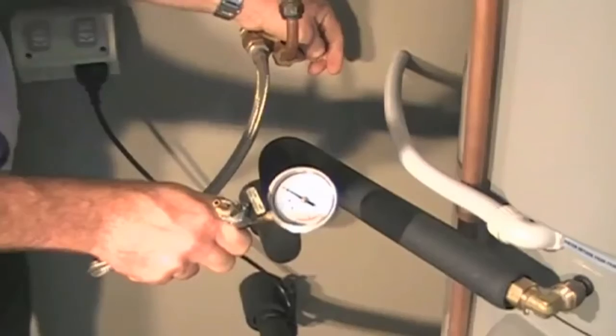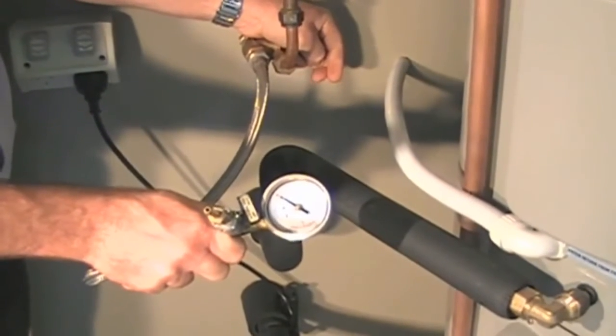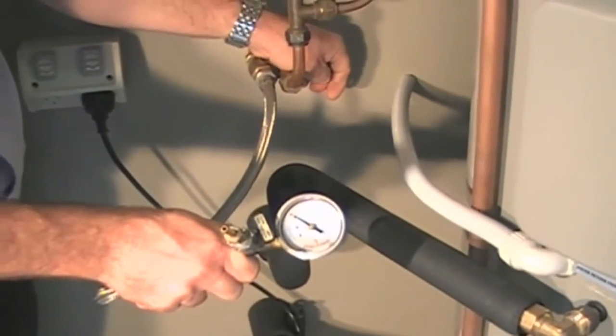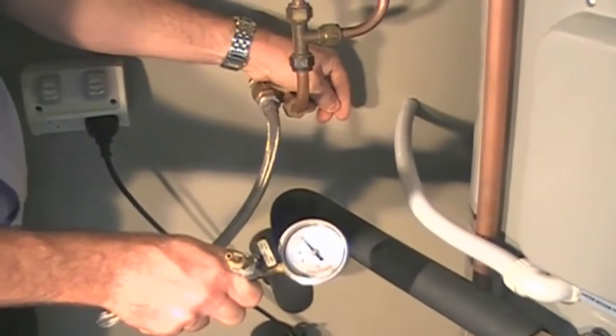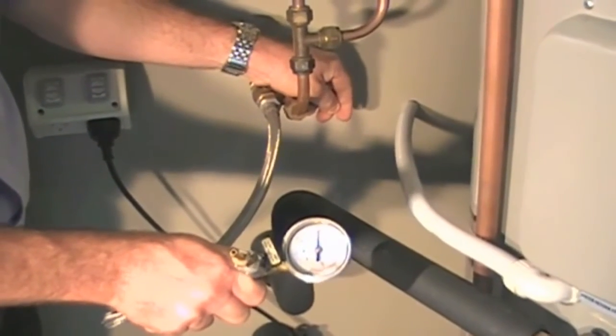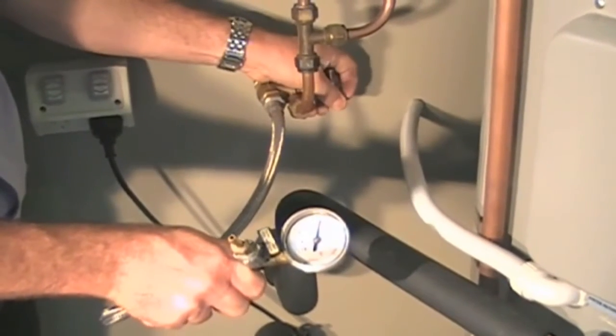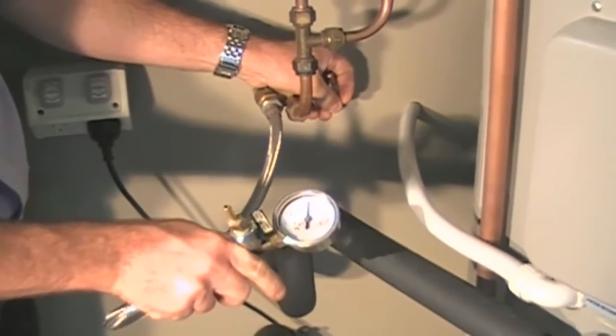Check the mains pressure. If it is over 1100 kPa, connect a pressure limiting valve as required by law. If it is over 800 kPa, consider connecting a limiting valve as this may prevent the possibility of water hammer if it is going to occur.